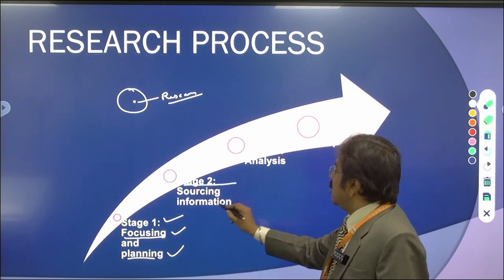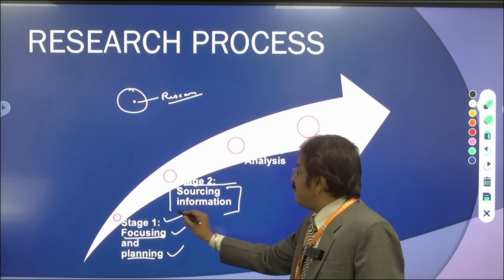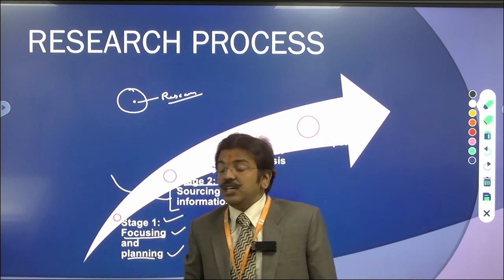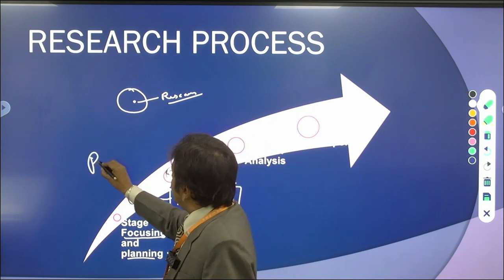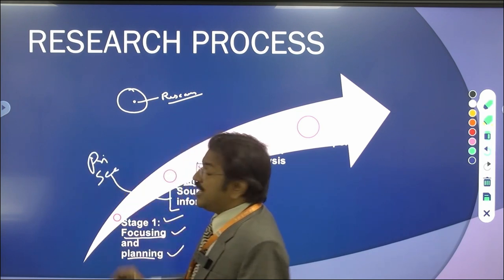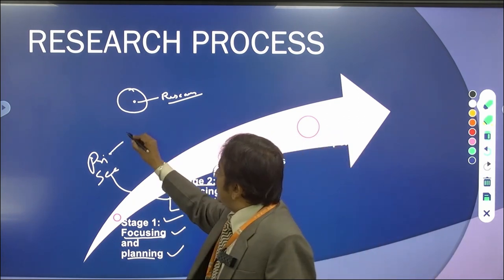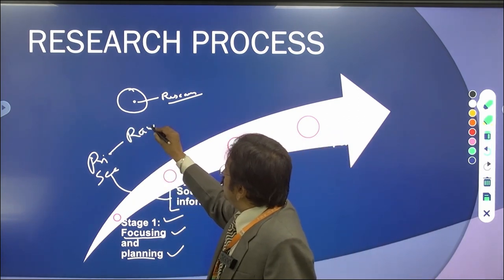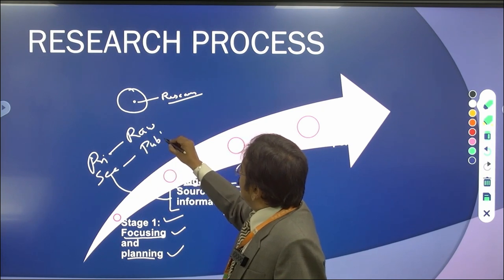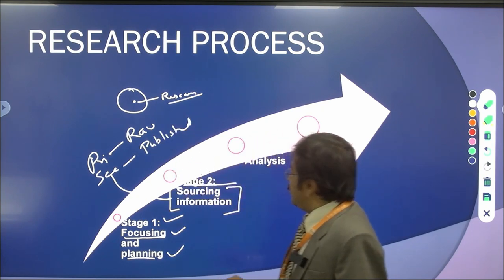In the second stage, you are going to source your information — from which source you are going to get your information, whether the source is primary or secondary. If it is raw data, it is a primary source, and if it is published data, it is a secondary source. Sourcing information is very important.